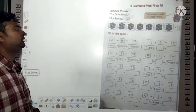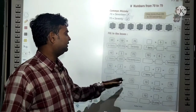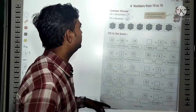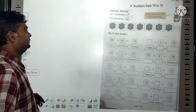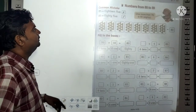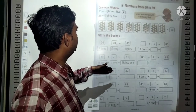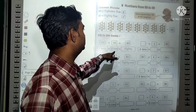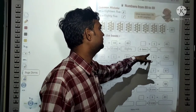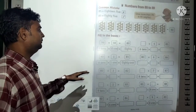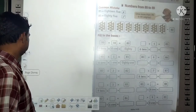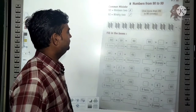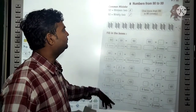Now 70 to 79 — in the same way you will write this. Wherever you feel any type of problem, you can ask me. It is given that 70 means 7 tens plus 10 ones equals 80; 8 tens, 0 ones. You will write in numerals also. Now, 90 to 99 — in the same way, you will do this page also.